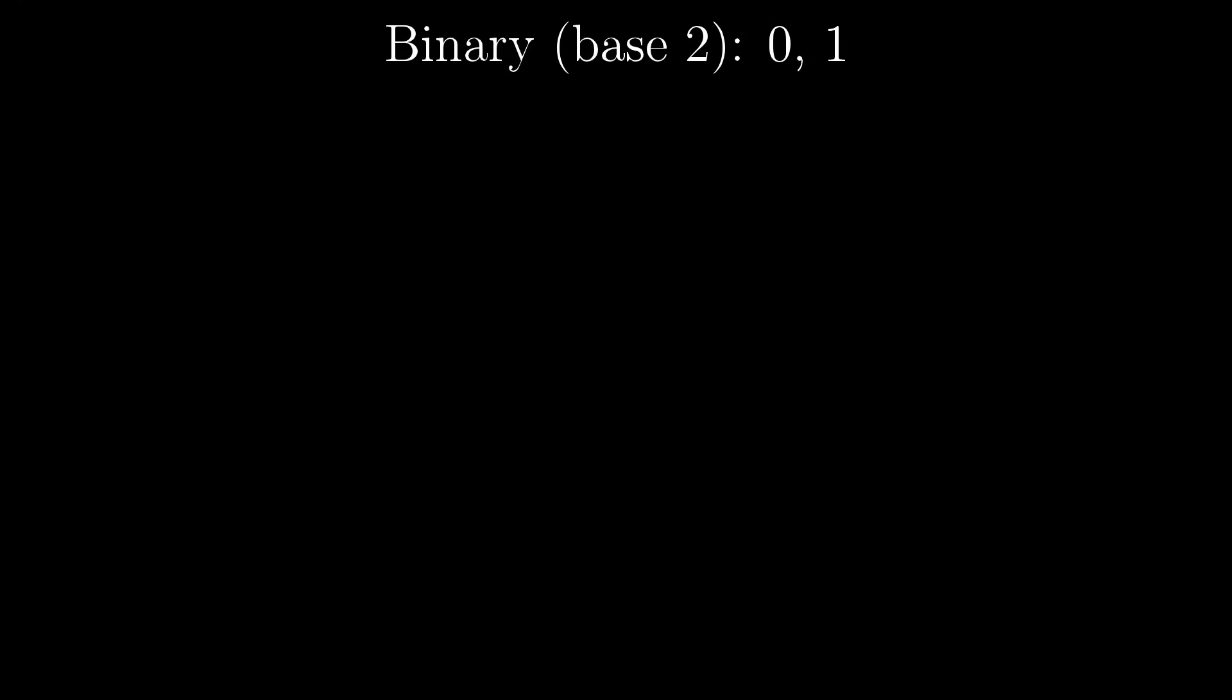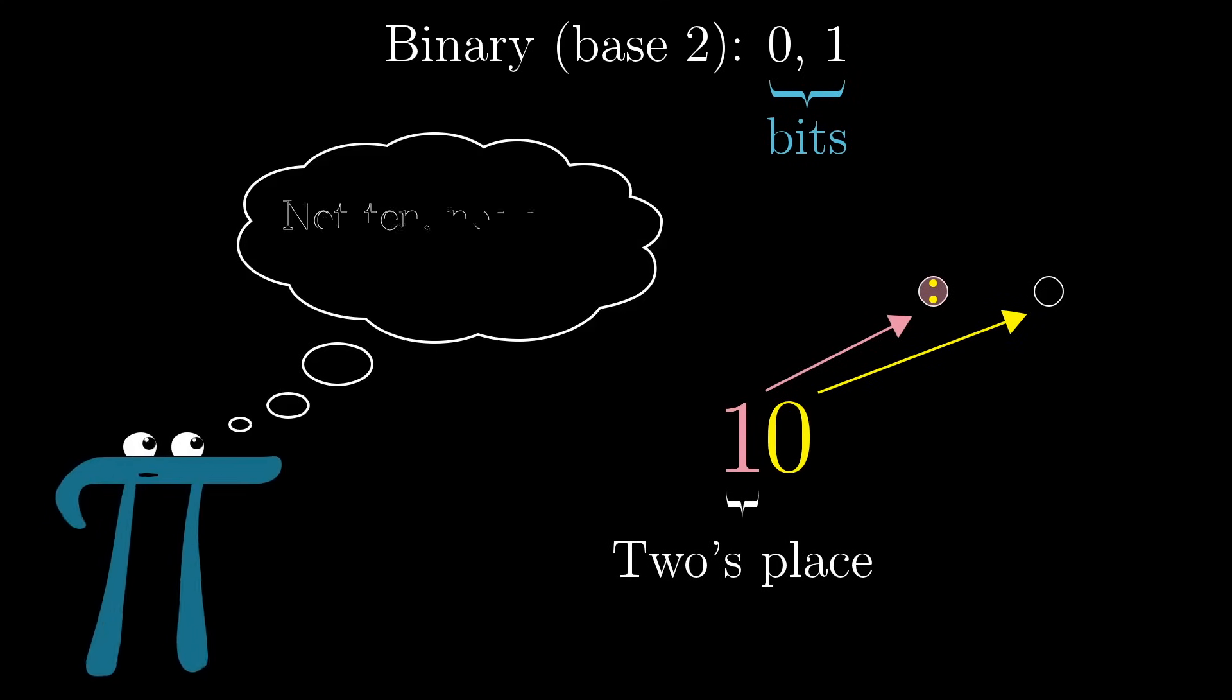In binary, also known as base 2, you limit yourself to two digits, 0 and 1, commonly called bits, which is short for binary digits. The result is that when you're counting, you have to roll over all the time. After counting 0, 1, you've already run out of bits, so you need to roll over to a 2's place, writing 1, 0, and resisting every urge in your base 10 trained brain to read this as 10, and instead understand it to mean 1 group of 2 plus 0.